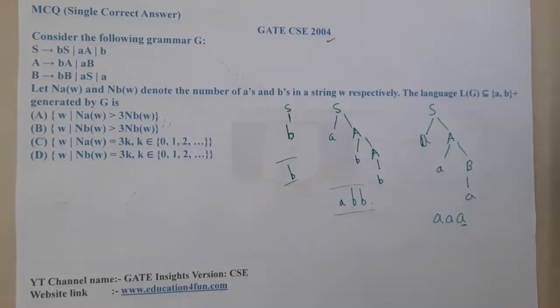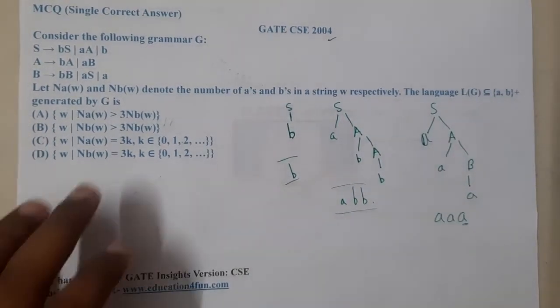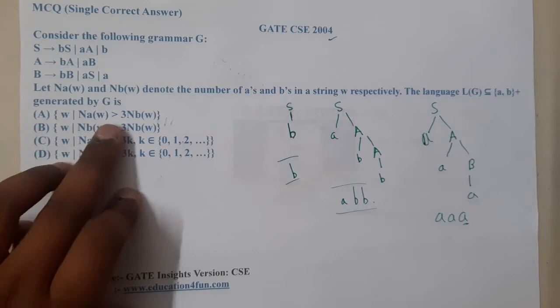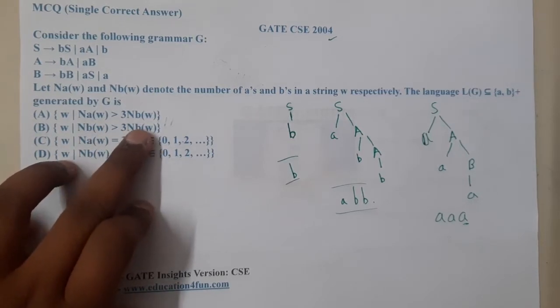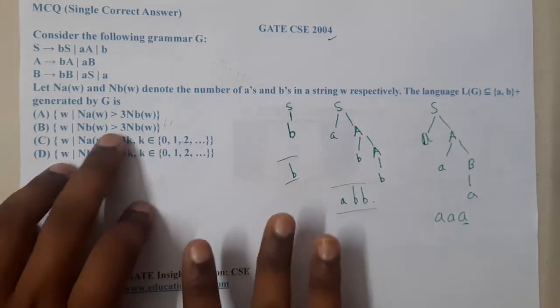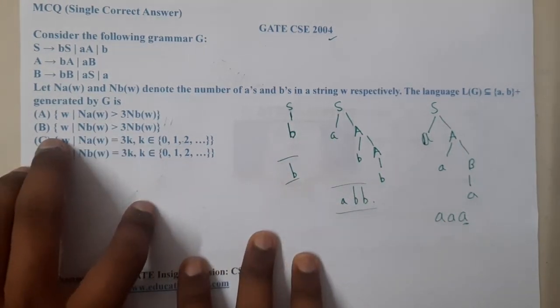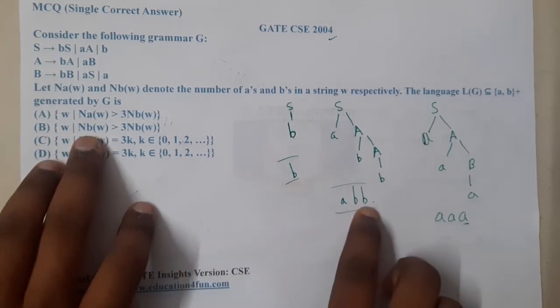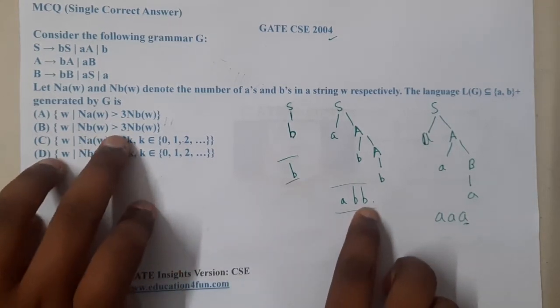Now let us check options. Option A says that length of a's will always be greater than three times length of b. So in our three cases it is following. It's okay for now.